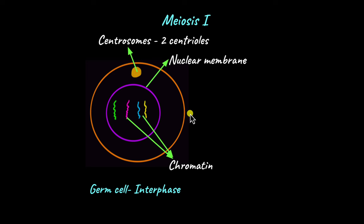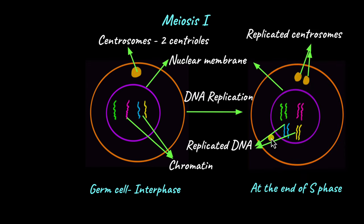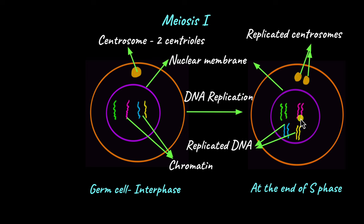Before it can undergo cell division, be it mitosis or meiosis, the cell has to replicate its DNA, and that happens in the S phase of the cell cycle. So at the end of S phase, you have replicated DNA and replicated centrosomes as well. If this one squiggly line is chromatin, then this is replicated chromatin because you see 2 squiggly lines. This answers the question of how 4 cells containing 23 chromosomes each can be formed at the end of meiosis, because the DNA has been replicated. So at the end of meiosis, one chromosome can go to one cell and the other to another cell, allowing the cell to go from diploid to haploid.